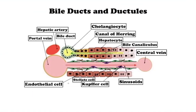Bile ducts are present in portal tracts and are lined by cuboidal to columnar epithelium attached to a basement membrane. The smallest portal tract contains one or more bile ducts, usually accompanied by an artery and a vein. Ductules are located in the periphery of the tracts and transport bile from the canals of Hering to the ducts. The portal bile ducts anastomose to form larger ducts that exit at the hilum as right and left hepatic ducts, deriving blood supply from surrounding plexuses supplied by the hepatic artery.